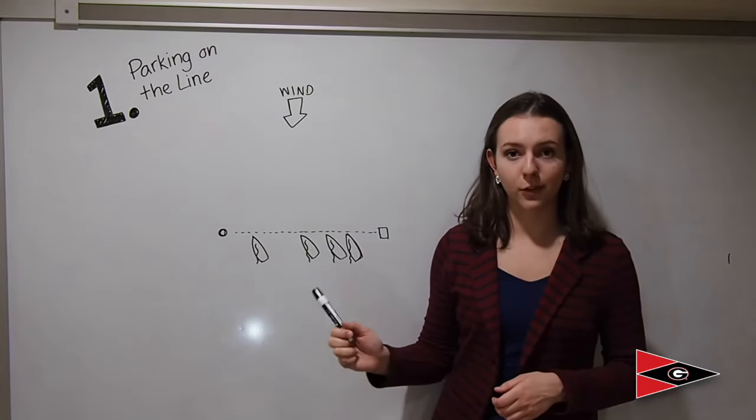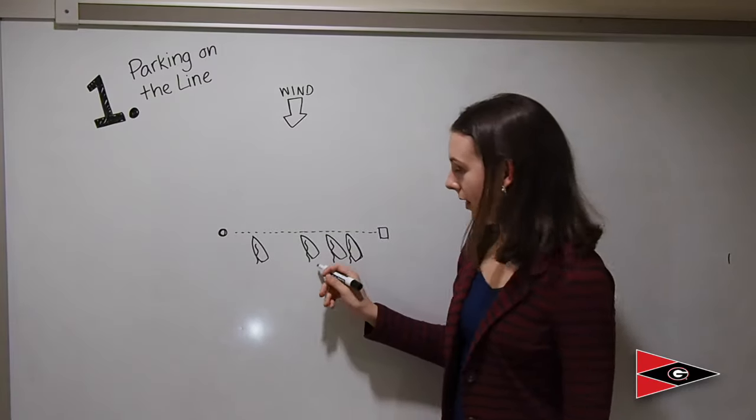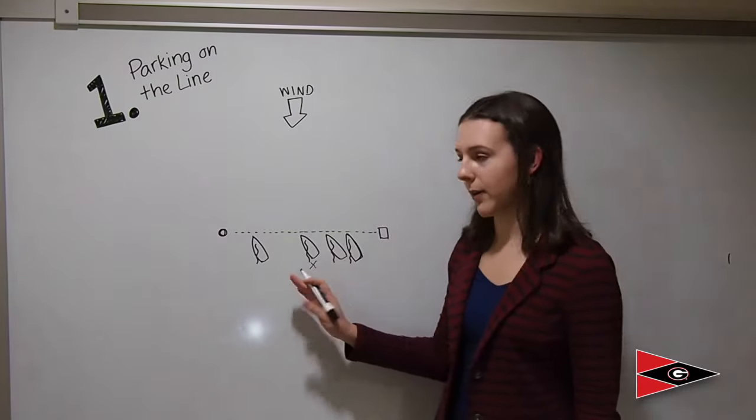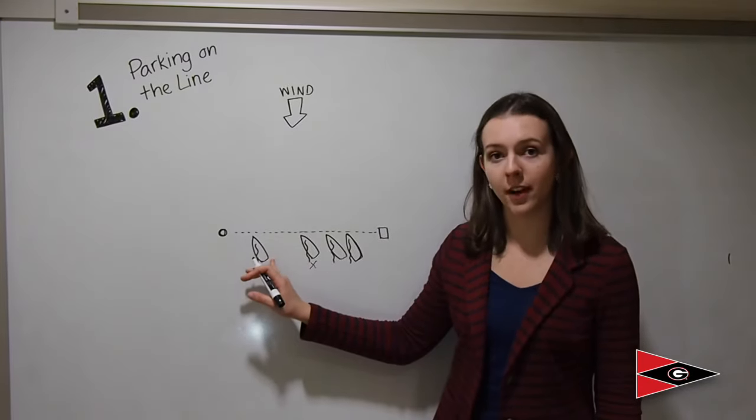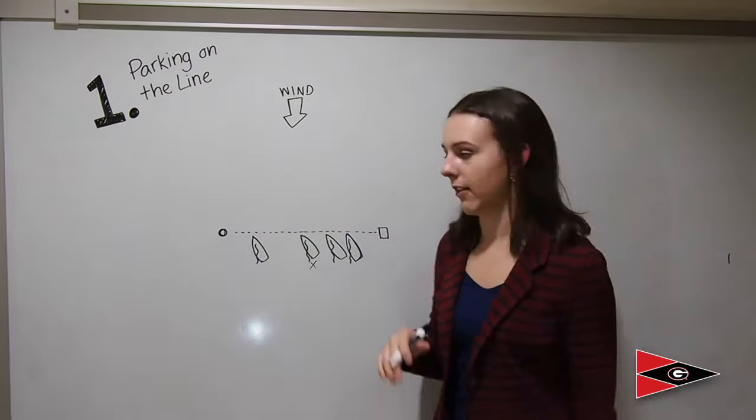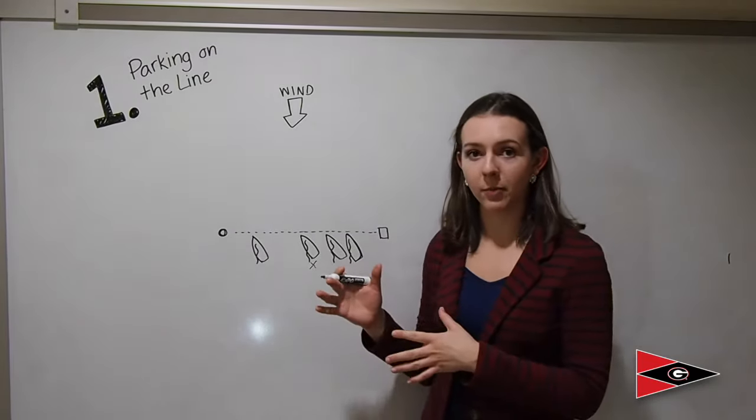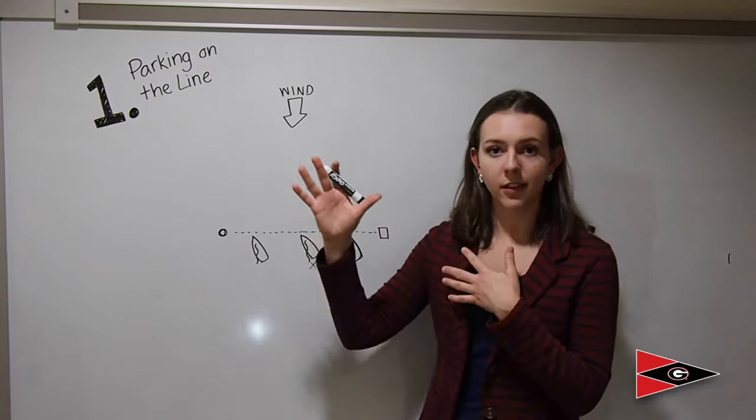Something you want to take into consideration with this strategy is having a hole to leeward of you. In this situation, this boat would be in the best position to start because they have open space between them and the next boat that allows them to bear off and gain speed and then cross the starting line. These boats over here have boats directly to leeward of them, so the boat below them is preventing them from heading down and getting speed.